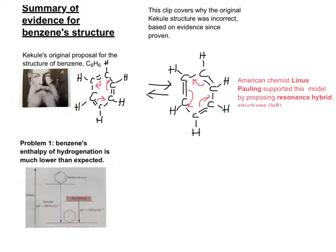Looking at the diagram, Kekulé's structure drawn in skeletal form would give three values of minus 120 kilojoules per mole, which is the standard enthalpy of hydrogenation of a carbon-carbon double bond. However, it's been proven that benzene's actual enthalpy of hydrogenation is minus 208, not minus 360. So on the enthalpy profile diagram, real benzene sits somewhere in between cyclohexane at the bottom and cyclohexatriene, the cyclic alkene, at the top.